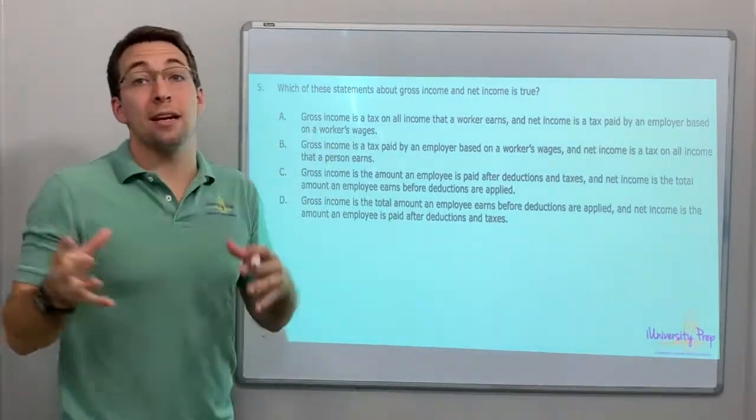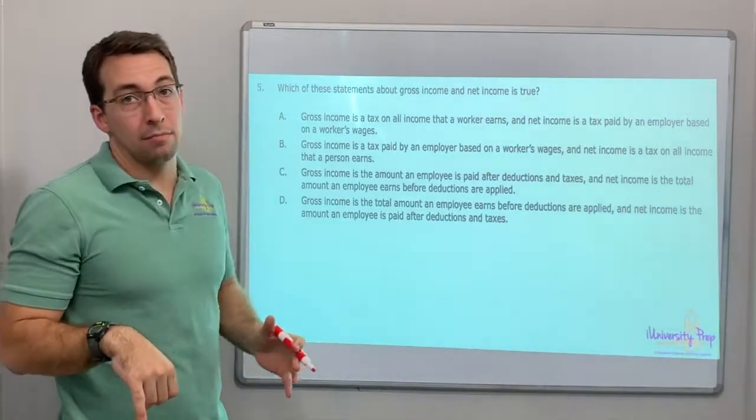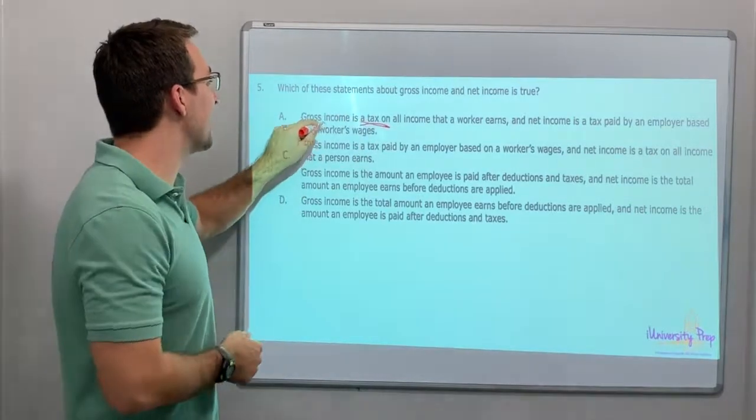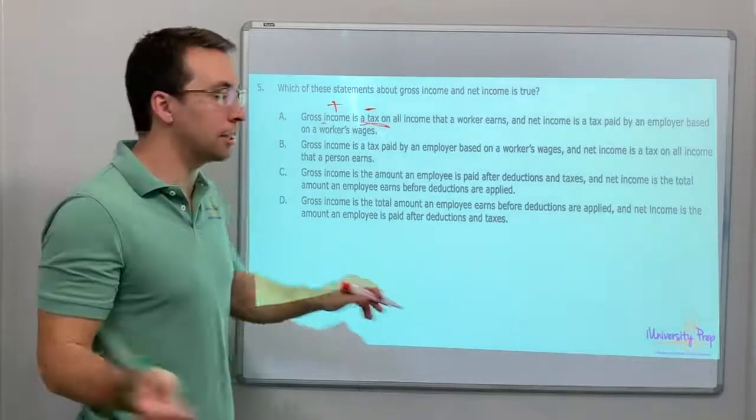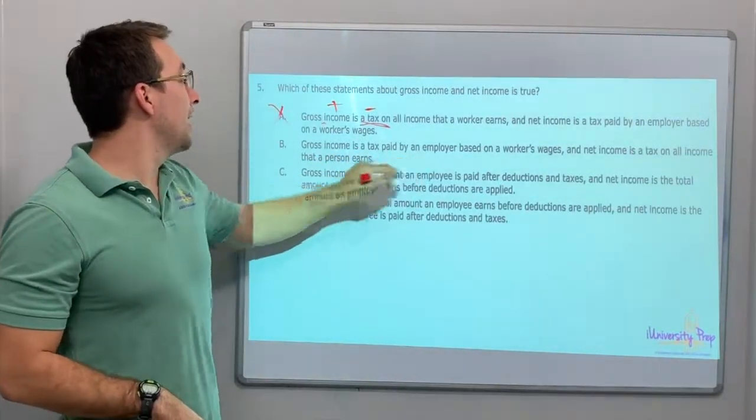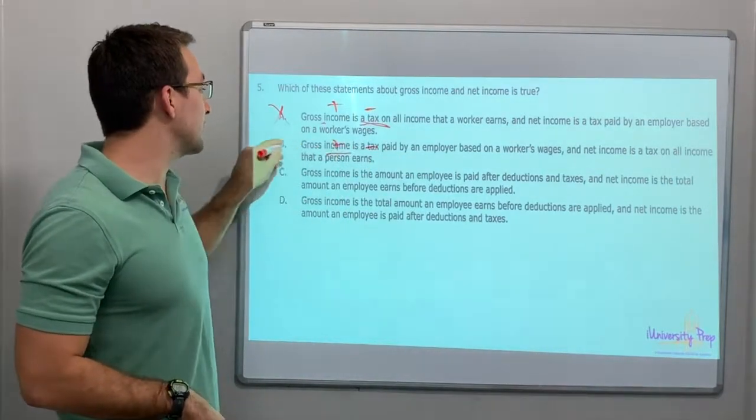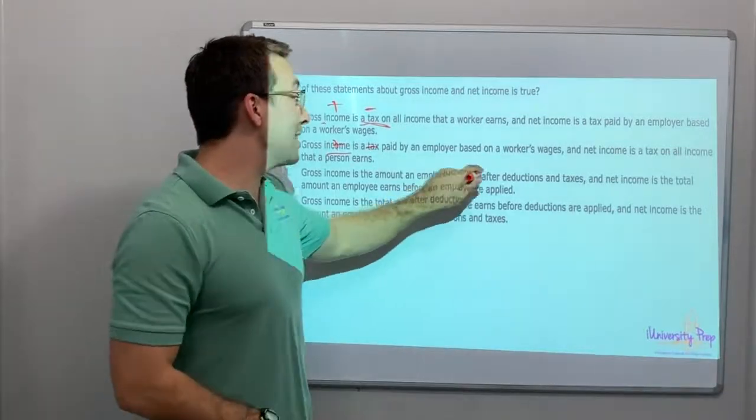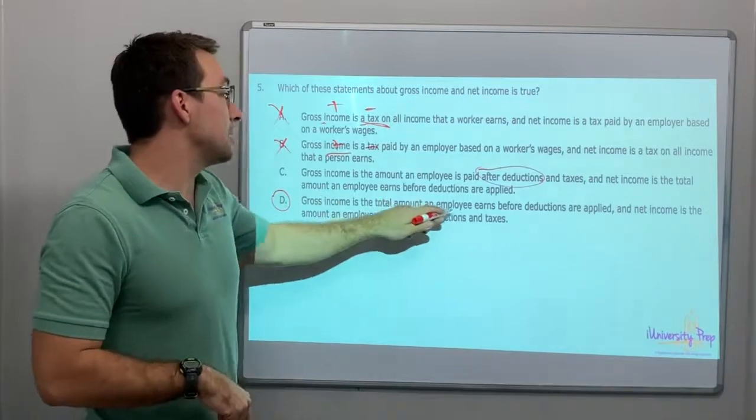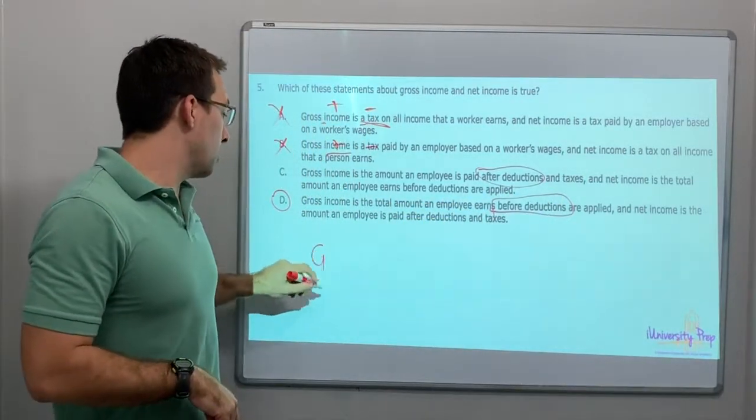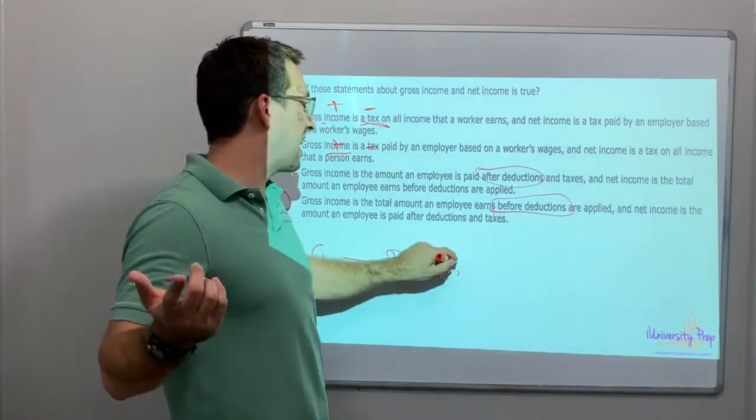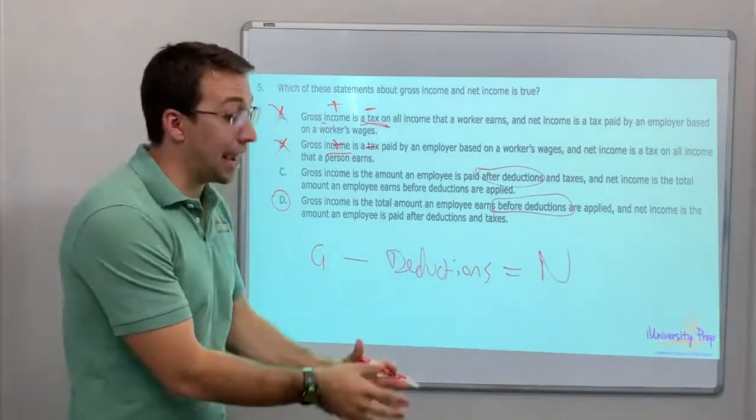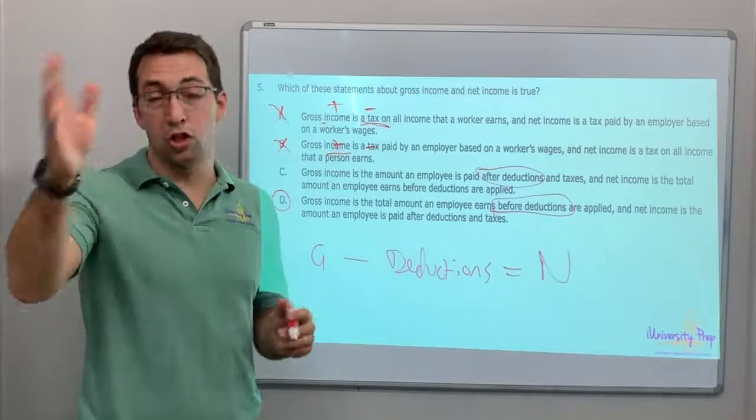Which of these statements about gross income and net income is true? Gross income is a tax on all income? No, it's income. Tax equals minus, income equals plus. Those are contradictory. No. Gross income is a tax paid by, gross income is a tax? No, that's a minus and a plus. That's contradictory. Gross income is the amount an employee is paid after deductions. After deductions is wrong. Then gross income is the amount of pay before deductions. Gross minus deductions. So taxes, right? I've been writing taxes in this video. Gross minus deductions equals net. Gross is big. Then taxes are taken out and the net is small. That's a super basic way to look at gross and net income.